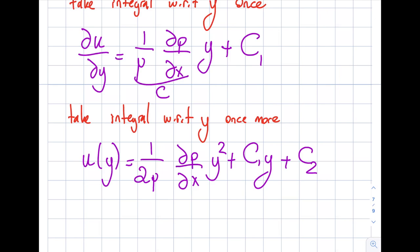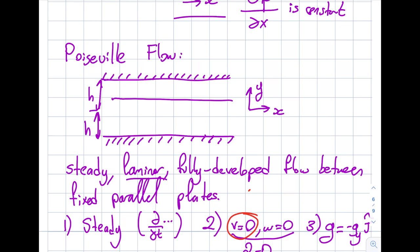I have two constants C₁ and C₂ that I don't know, so I need boundary conditions. The no-slip condition says the fluid sticks to the solid: if the solid is not moving, the velocity of the fluid at the wall is zero. Note that Y is defined from the center, so the top plate is at y = +h and the bottom plate is at y = −h.